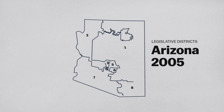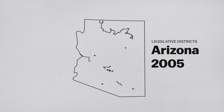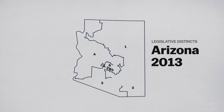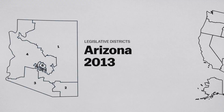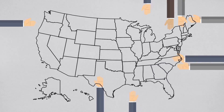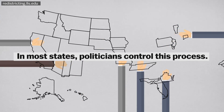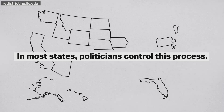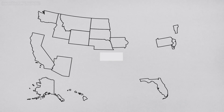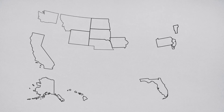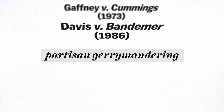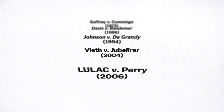Every 10 years after the census, states redraw the borders of their legislative districts. In most states, politicians get to control that process. And if they're clever about how the districts are drawn, they can make it easier for their own party to win more of them. It's called partisan gerrymandering, and it's bad for democracy, but the Supreme Court hasn't intervened in decades.